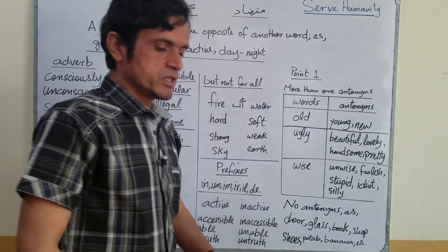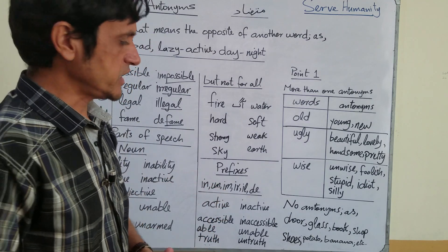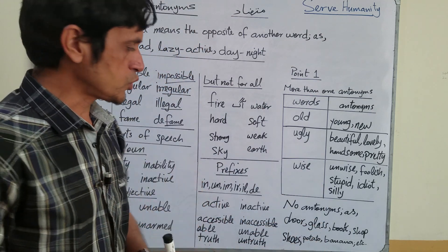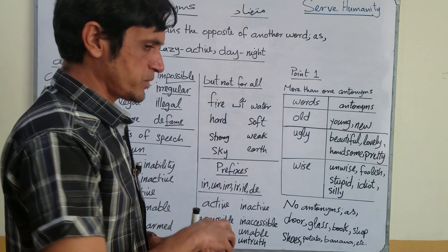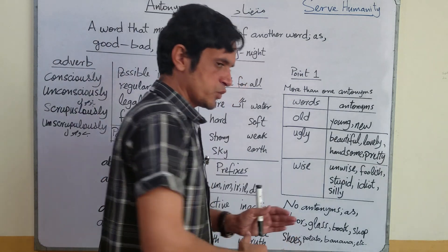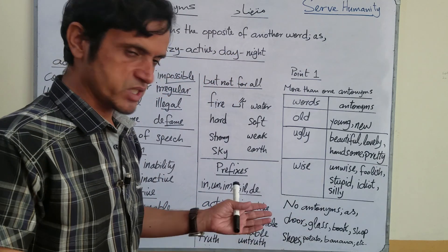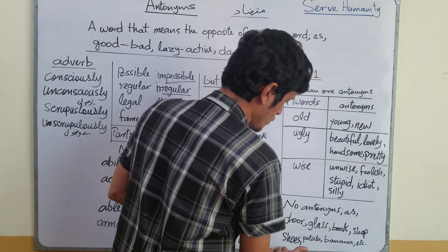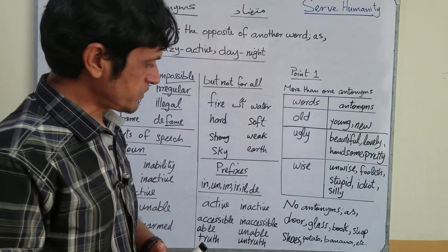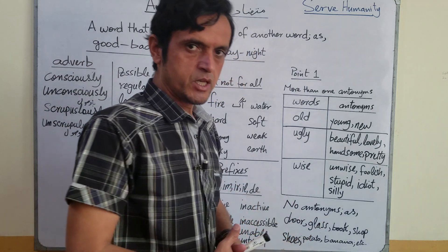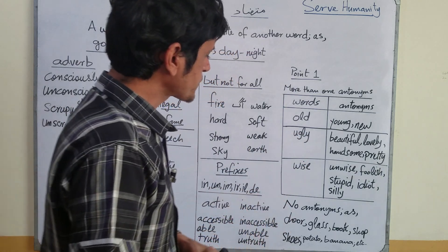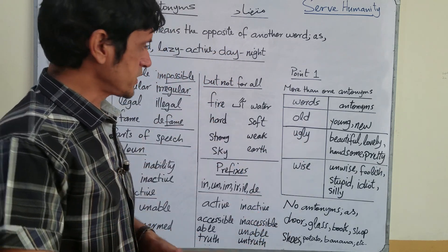That was the first point. The second point is: not every word necessarily has an antonym. It is not necessary that every word you encounter will have an antonym. This is particularly true for neuter nouns, because neuter nouns in English do not have gender — they have neither feminine nor masculine. For example, door — if someone asks what the antonym of 'door' is, it doesn't have one. Glass, book, shop, shoes — particularly in vegetables and fruits — for example, potato: what would be the antonym of potato? It doesn't have one. Banana — it's a fruit, so it has no antonym. You cannot say the antonym of banana is apple. That is incorrect.